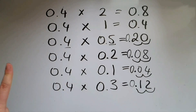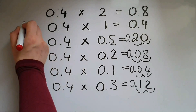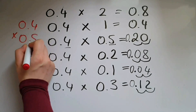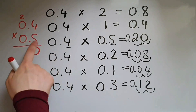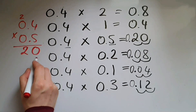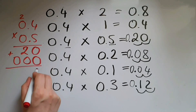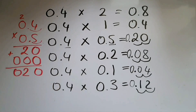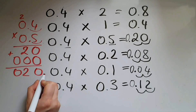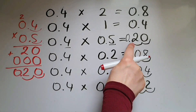If this method doesn't make much sense, don't worry — you can use the long method as well. Let's do 0.4 times 0.5 using the long method. 5 times 4 is 20, so 0 down and 2 carried over. 5 times 0 is 0, and the 2 makes 2. Moving down, put a 0 down. 0 times 4 is 0. 0 times 0 is 0. Now this number has one decimal place and this one has one decimal place, so that's two decimal places in total. Giving the answer two decimal places: 0.20, which is what we had before.